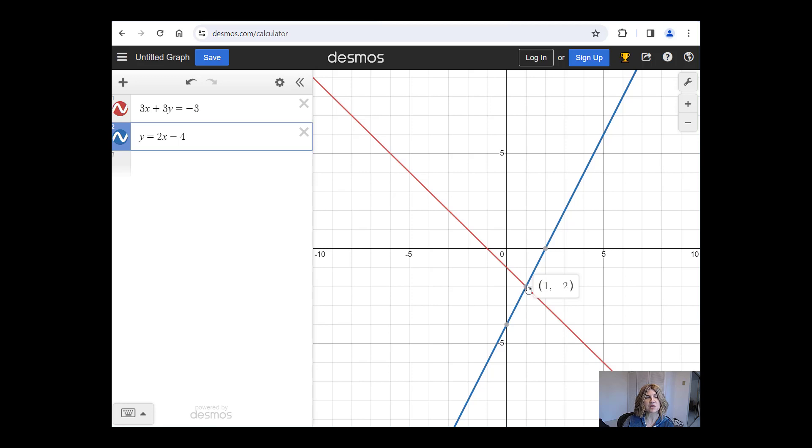But Desmos is just fine with that, and it gives the solution of 1, negative 2, which means that when x is 1, then y is negative 2. And that is the only point that is on both the line 3x plus 3y equals minus 3, and on the line of y equals 2x minus 4.